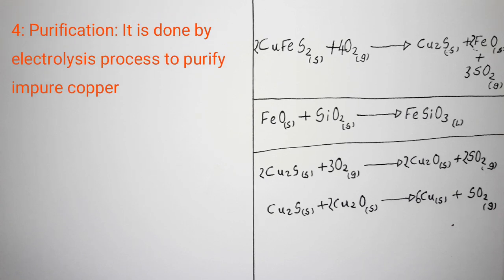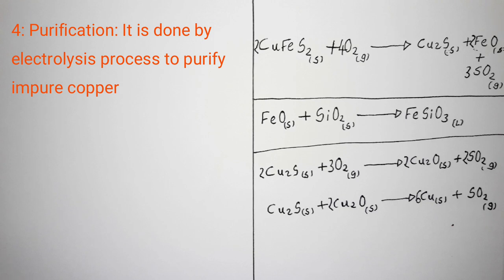To recap: the first process was crushing, the second was concentration, the third was reduction — which included first roasting, smelting, and second roasting — and the fourth and final process is purification of copper.